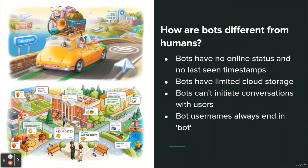How are bots different from humans? Bots have no online status and no last-seen timestamps — the interface shows the label 'bot' instead. Bots have limited cloud storage, and older messages may be removed by the server shortly after they have been processed. Bots can't initiate conversations with users; a user must either add them to a group or send them a message first. Bot usernames always end in 'bot,' and when added to a group, bots don't receive all messages by default.